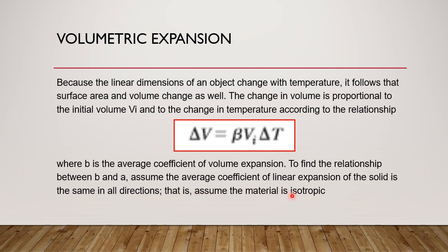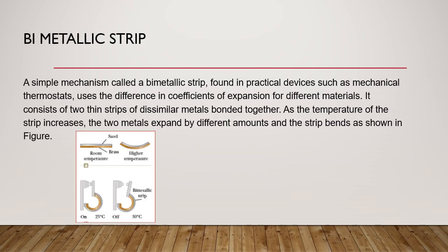Examples of isotropic materials include glass. Now, let us also discuss the bimetallic strip, because the bimetallic strip is a principle of thermodynamics. A simple mechanism called a bimetallic strip is found in practical devices such as mechanical thermostats.